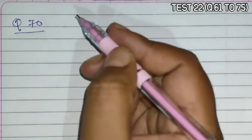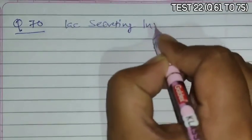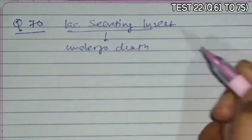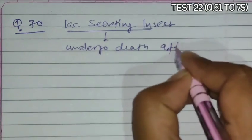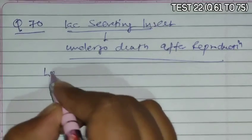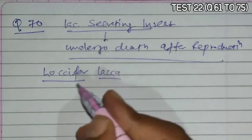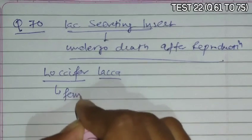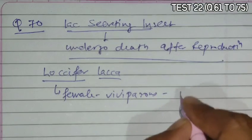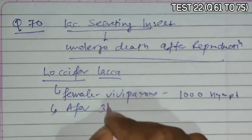Question 70 asks which lac-secreting insect undergoes death after reproduction. In the case of lac-producing insect Laccifer lacca, it is a commonly cultured insect. The females are viviparous and produce around 1000 nymphs.